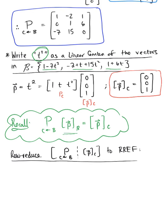We row reduce the augmented matrix where we have the change of coordinates matrix from basis B to basis C augmented with the coordinates of vector p relative to basis C. The augmented matrix is [1, -2, 1 | 0; 0, 1, 6 | 0; -7, 15, 0 | 1], and we want to reduce this to row reduced echelon form.